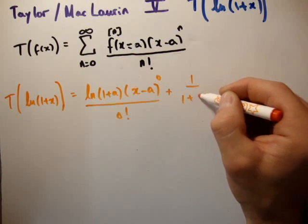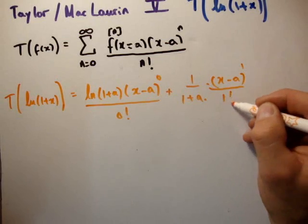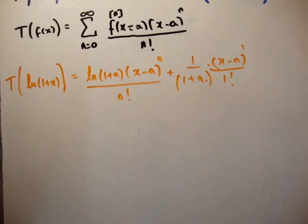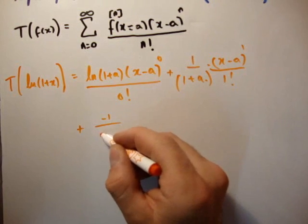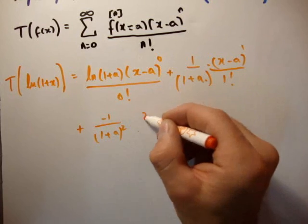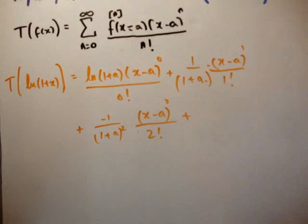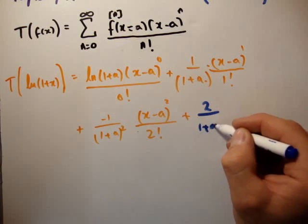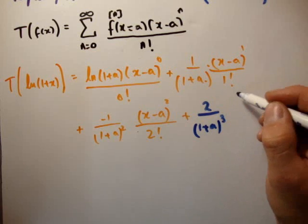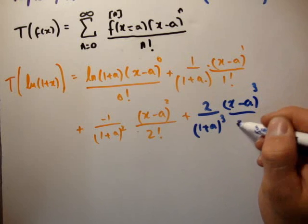Plus 1 over (1 plus a) times (x minus a) to the 1 divided by 1 factorial. And so on. Will we do one more? Yeah, plus, we'll do one more. We have negative 1 over (1 plus a) squared, we have (x minus a) squared, and we have 2 factorial. And I said I wouldn't, but I'll do one last one. We have 2 over (1 plus a) cubed, we have (x minus a) cubed divided by 3 factorial.